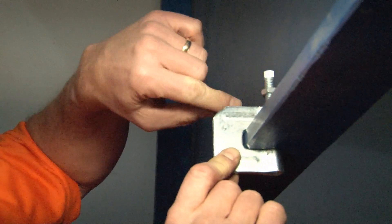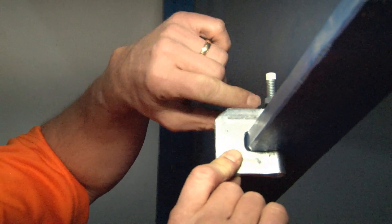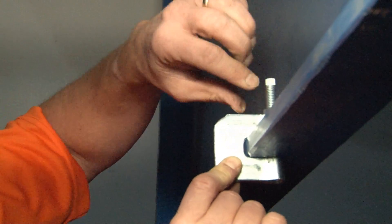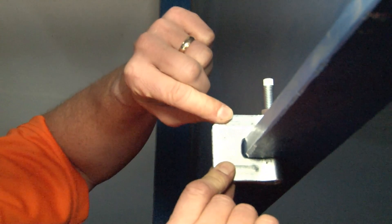At this point you want to secure the jam nut down to the top of the clamp to prevent any vibratory loosening that may occur in the building over time.